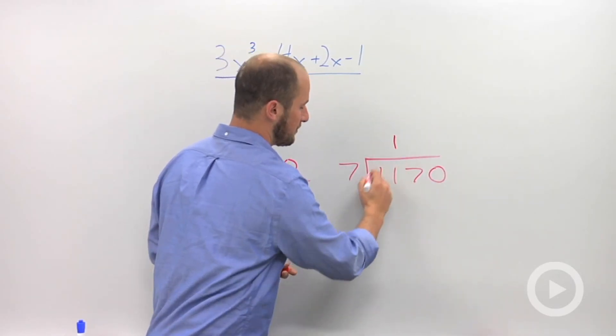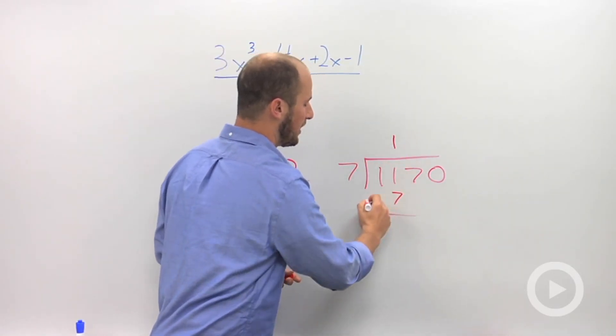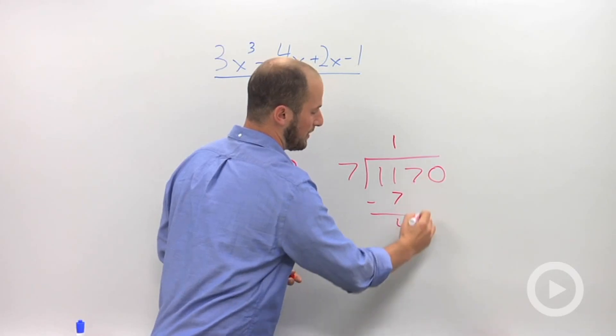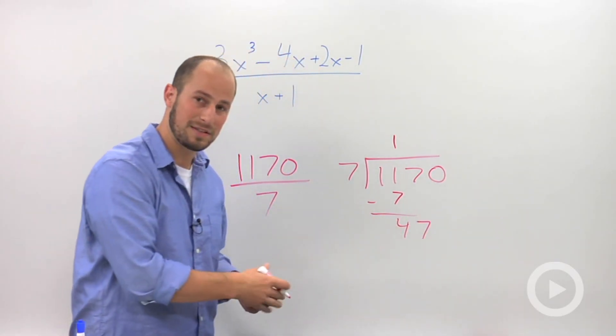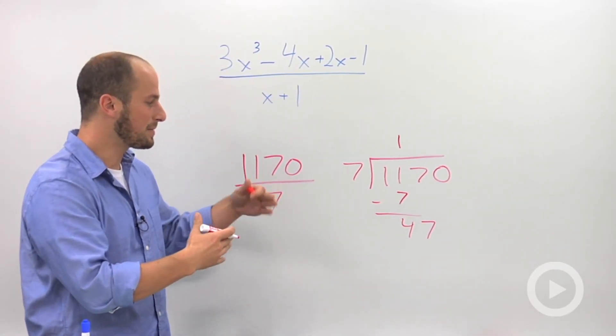Draw the 1. 1 times 7 is 7. And then we subtract, dropping down the next term, 47. Continue from there. How many times does 7 go into 47?